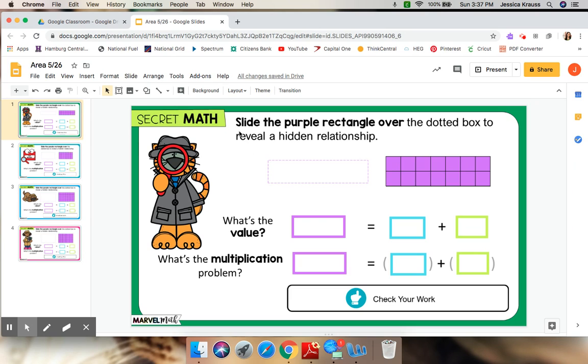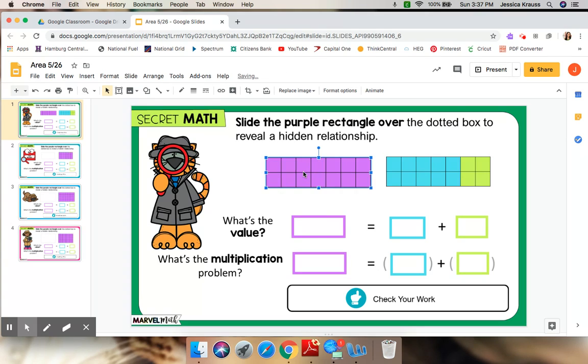So here we have, it says slide the purple rectangle over the dotted box to reveal a hidden relationship. So we're going to take our purple rectangle and we're going to slide it over. Now we have the original purple rectangle and then we have a rectangle that's the same size but it's split up into two different colors.